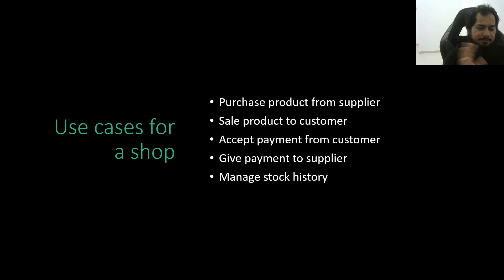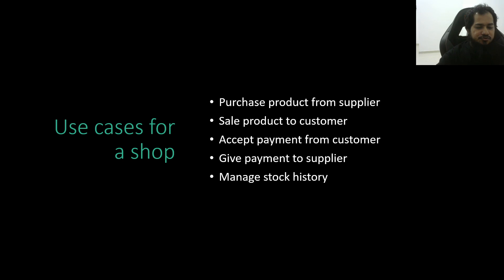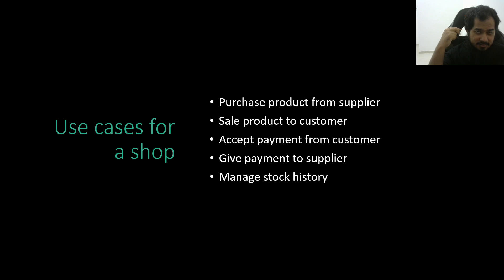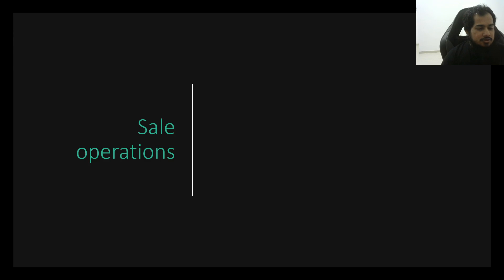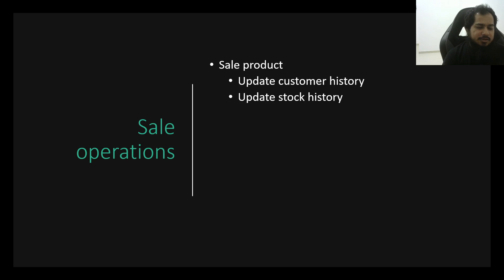Those are the brief operations. Many people focus on sell, accept payment, and manage stock history, but we will also cover purchase from supplier — because, as I repeat again, it is just the opposite of customer. So what are the sell operations? What can happen in a sell? When a sell happens, this is where production sell happens.